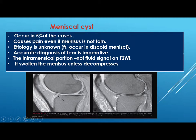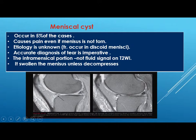A meniscal cyst occurs in 5 percent of cases. It causes pain even if the meniscus is not torn. Etiology is unknown. It frequently occurs in a discoid meniscus, and accurate diagnosis of the tear is imperative as the treatment will be different. The intrameniscal portion may not give a fluid signal on T2 — it has an intermediate signal — while the parameniscal portion has a fluid signal on T2.